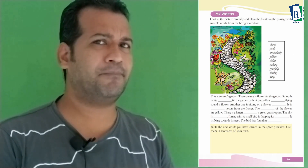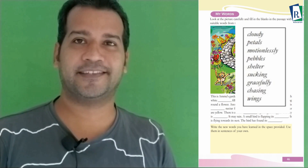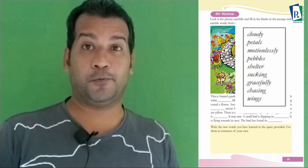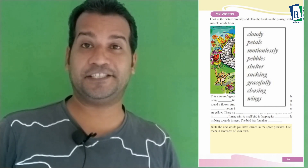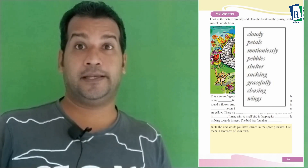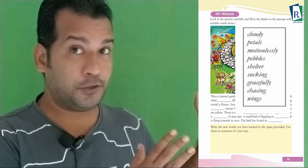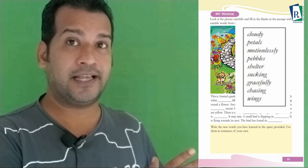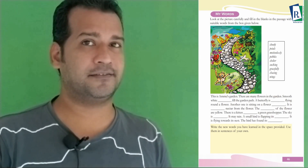Below the picture there is a passage with some blanks. You have to fill the blanks with suitable words from a box. Inside the box are the words: cloudy, petals, motionlessly, pebbles, shelter, sucking, gracefully, chasing, and wings. Select the appropriate word and fill the blanks. This is a simple task — you have learned these words in the lesson, so it is very easy.